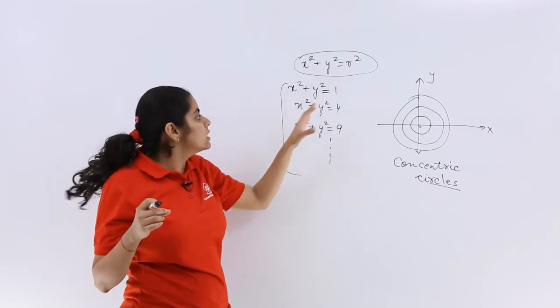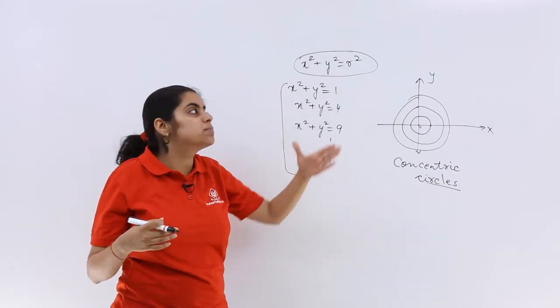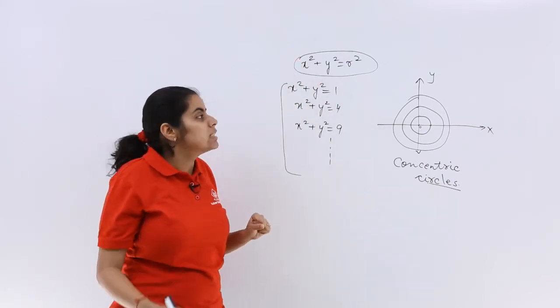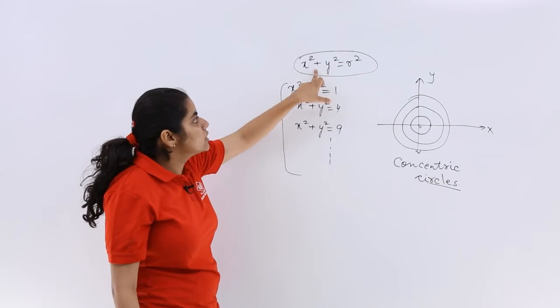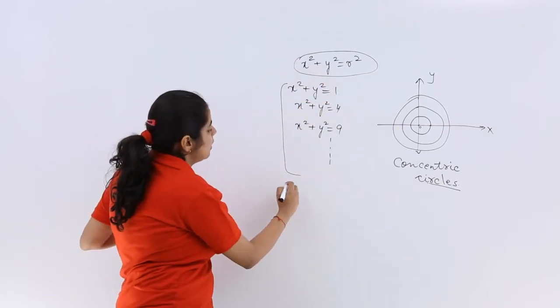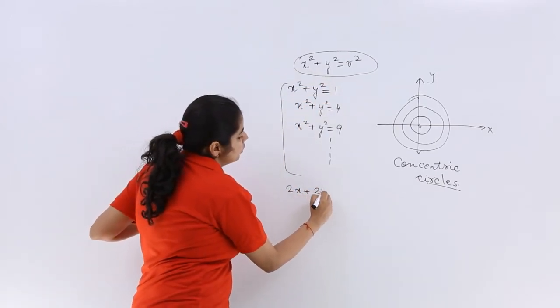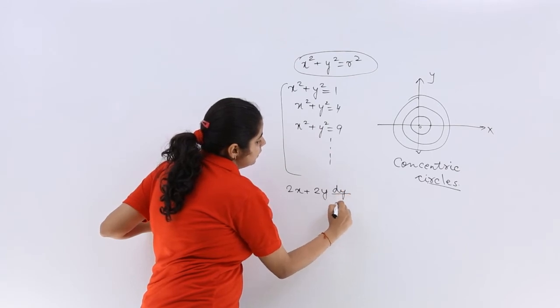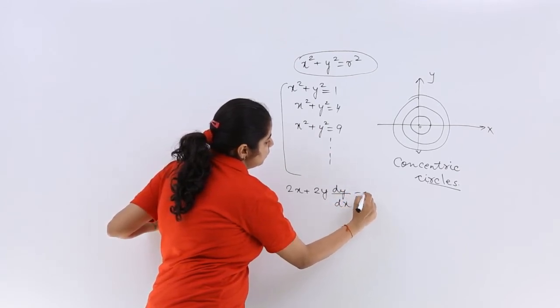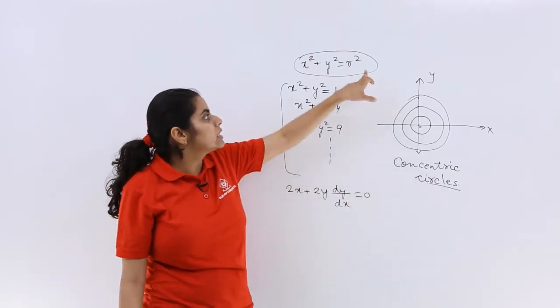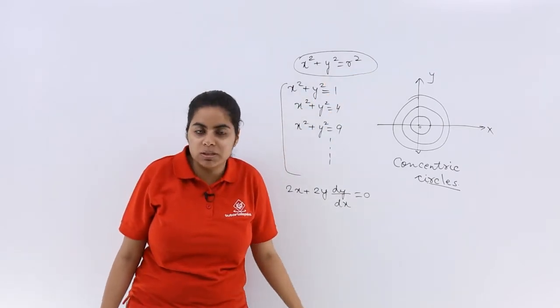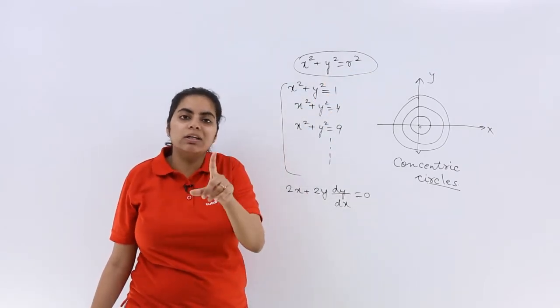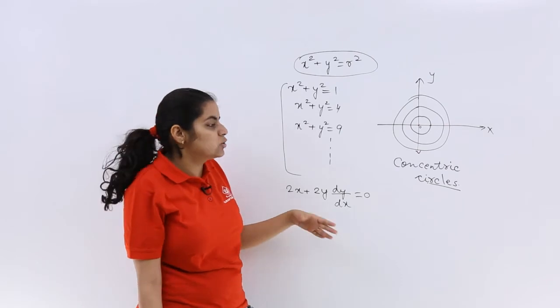We just differentiate it once, so it becomes 2x + 2y(dy/dx) = 0. As you see, r is a constant quantity, and there is only one constant in the picture, so differentiate only once.